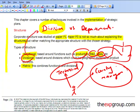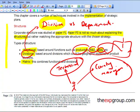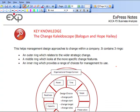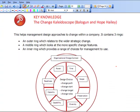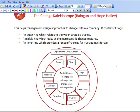So again, I'm not going to spend a lot of time on this because this should be assumed knowledge. Now, the next thing at the top of page 32 is something called the change kaleidoscope. Change kaleidoscope, Balogun and Hope Haley.